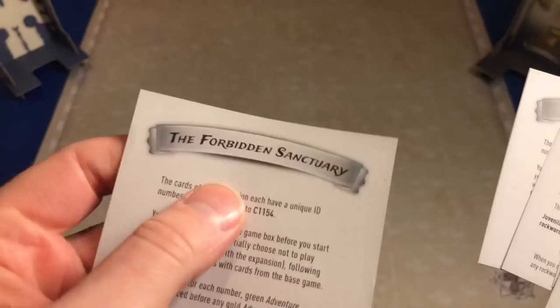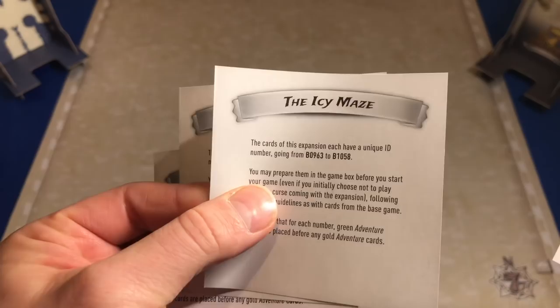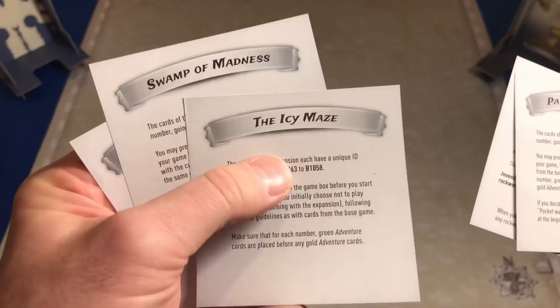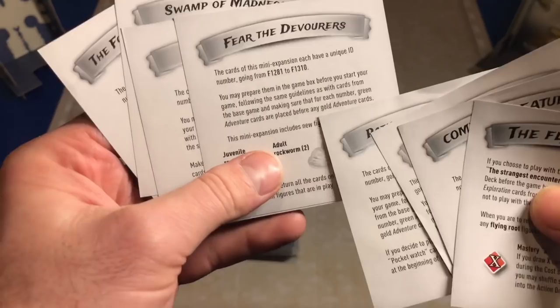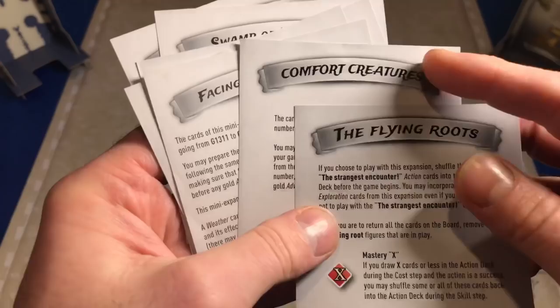The next thing we have to do is determine what expansions we plan to use. I'm using every one of them. Just because I'm using all the expansions, some of them like the Forbidden Sanctuary and the Swamp of Madness, a lot of these don't come into play unless you're actually doing those curses. But I want everybody to understand that all of these cards are inside my box. We are using Fear the Devourers, Path of Repentance, and Facing the Elements. These will take effect during our game. Also, I'm using Comfort Creatures and the Flying Roots. These are new to the What Comes Up Must Come Down game.